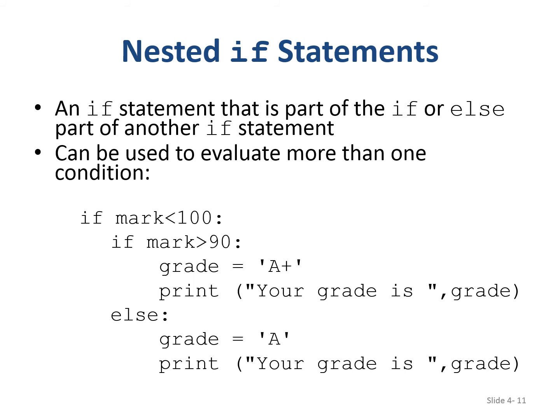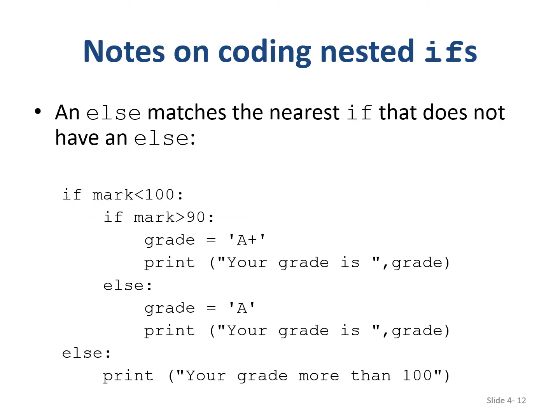For nested conditions: a nested if statement is an if statement that is part of the if or else block of another if statement, and can be used to evaluate more than one condition. For example, if the mark is less than 100, you check a further condition — if greater than 90 the grade is A+, or else the grade is A. The else matches the nearest if that does not have an else.